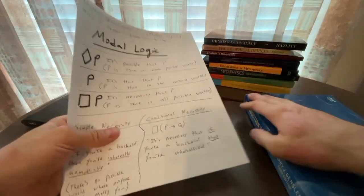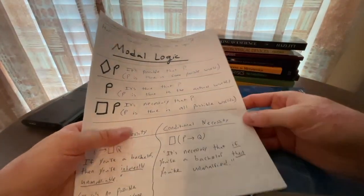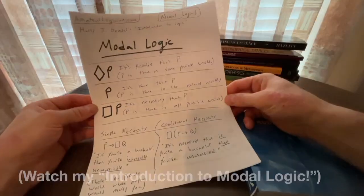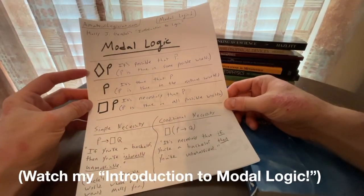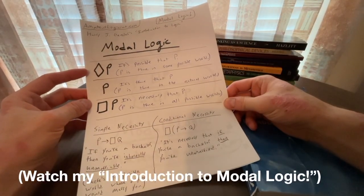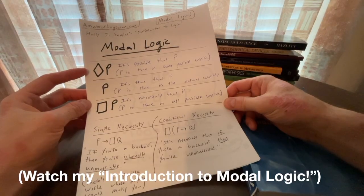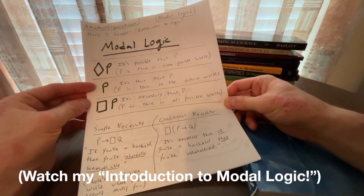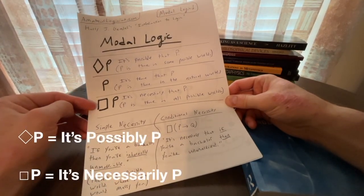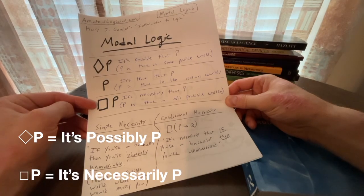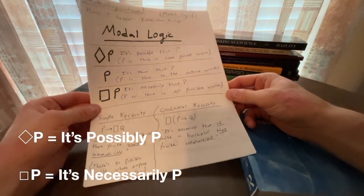So we're going to begin here with the diamond and the box. And I have other videos that go into this in more depth. We're to go relatively quick here. So diamond P, it's possible that P. P is true in some possible world. P alone just means it's true that P. P is true in the actual world. And box P is necessary that P. P is true in all possible worlds. It's a necessary truth.